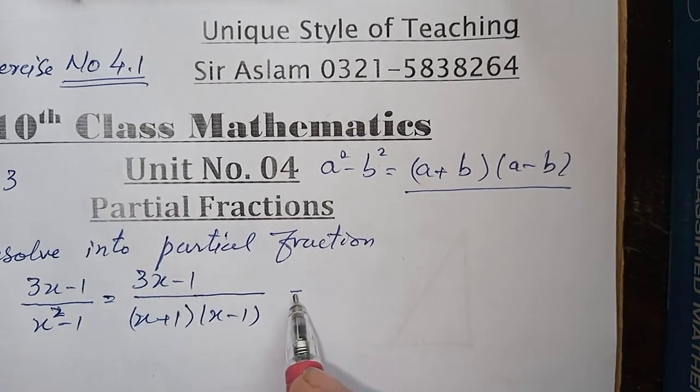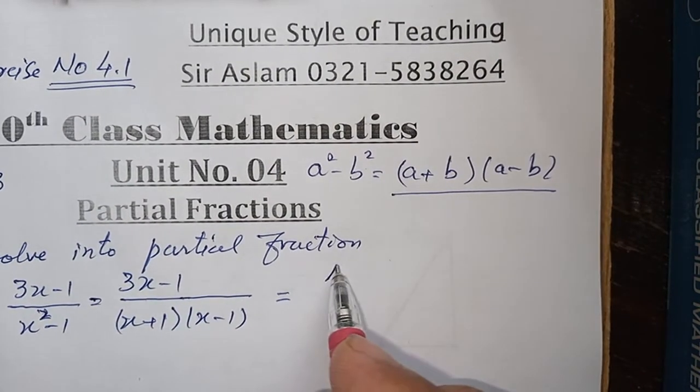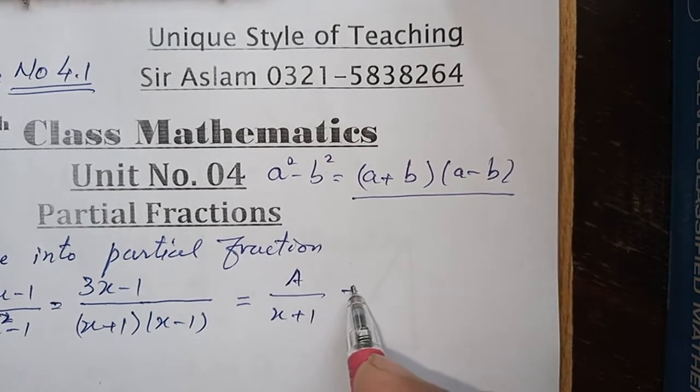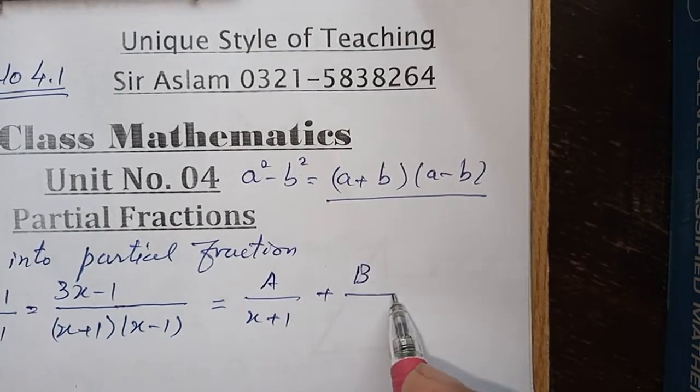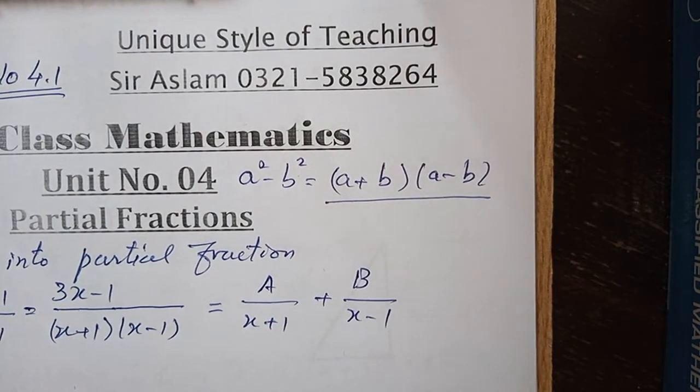इसको ही मैं यहीं पे partial fraction में convert करता हूं: A upon (x+1) plus B upon (x-1).